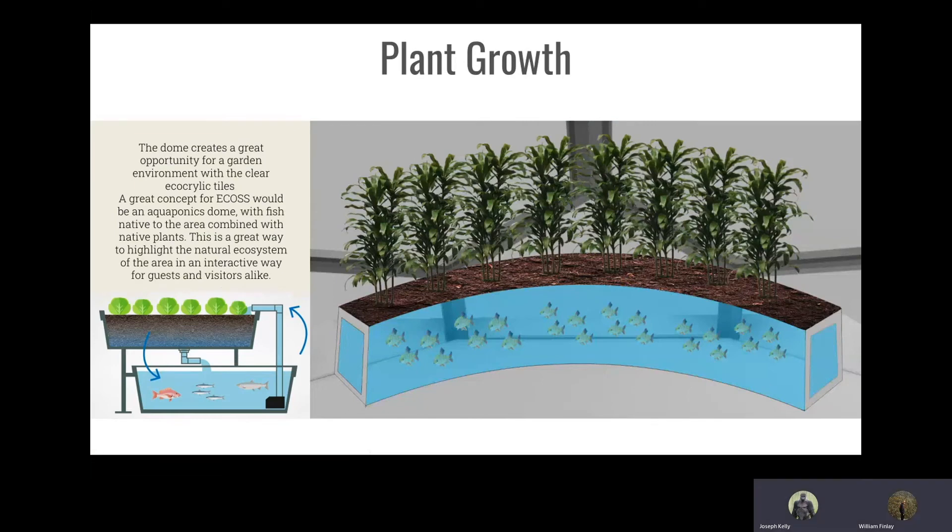The dome creates a great opportunity for a garden environment with the clear eco-acrylic tiles. A great concept for ECOS would be an aquaponics dome. With fish native to the area combined with native plants, this is a great way to highlight the natural ecosystem of the area in an interactive way for guests and visitors alike.